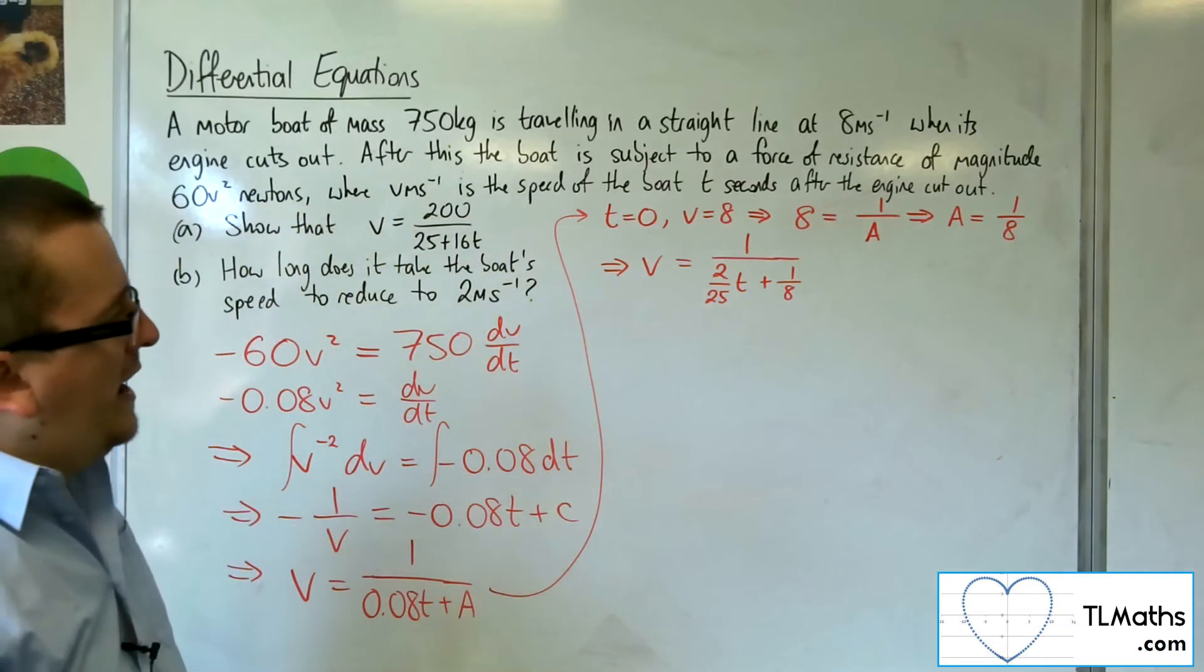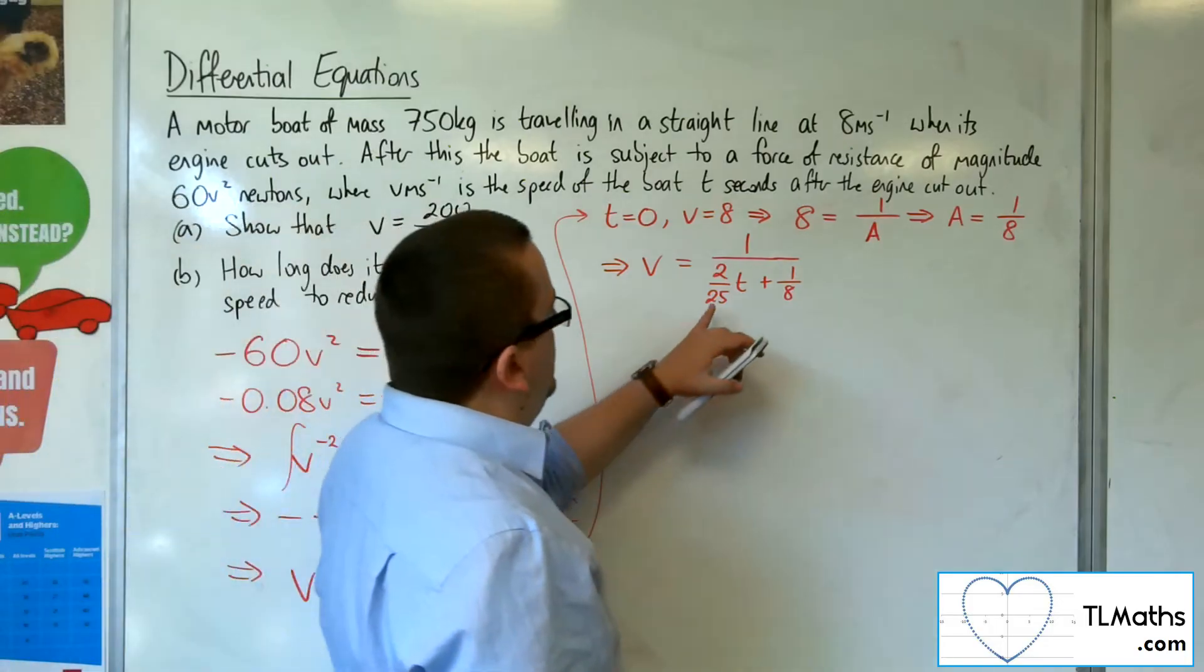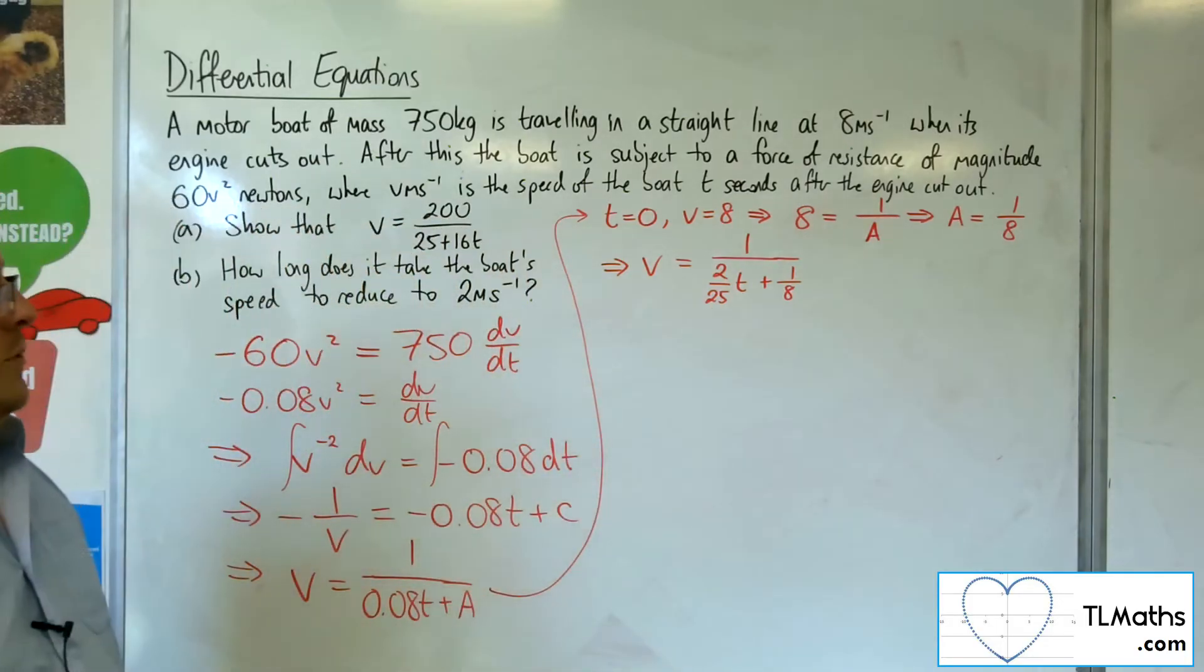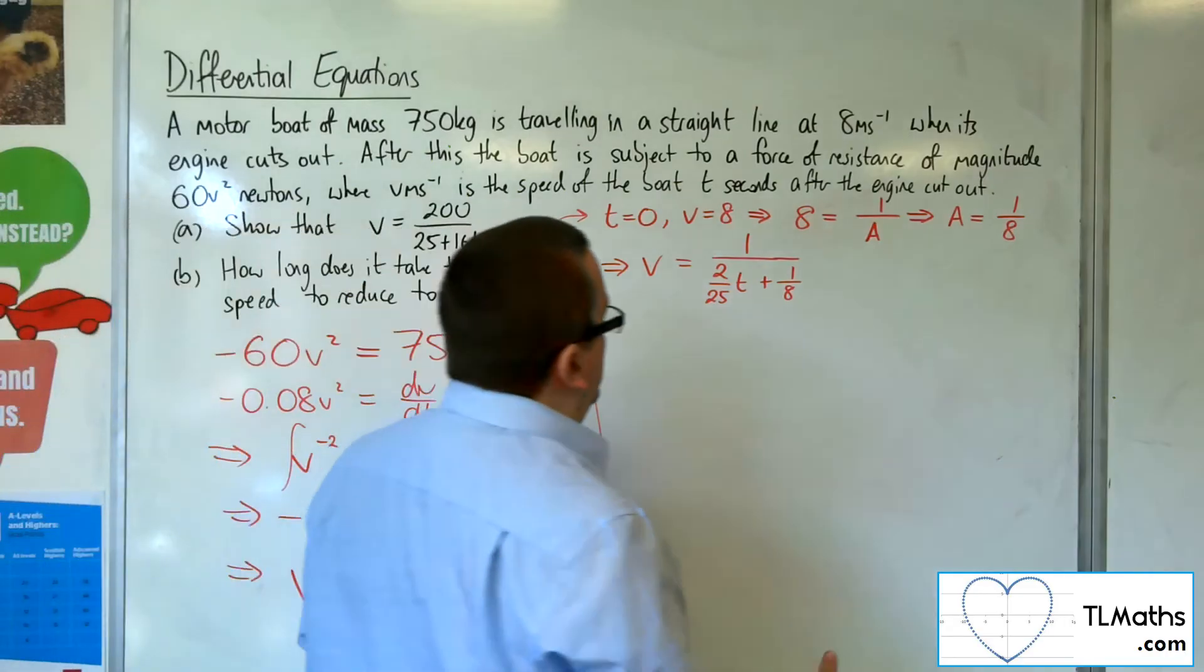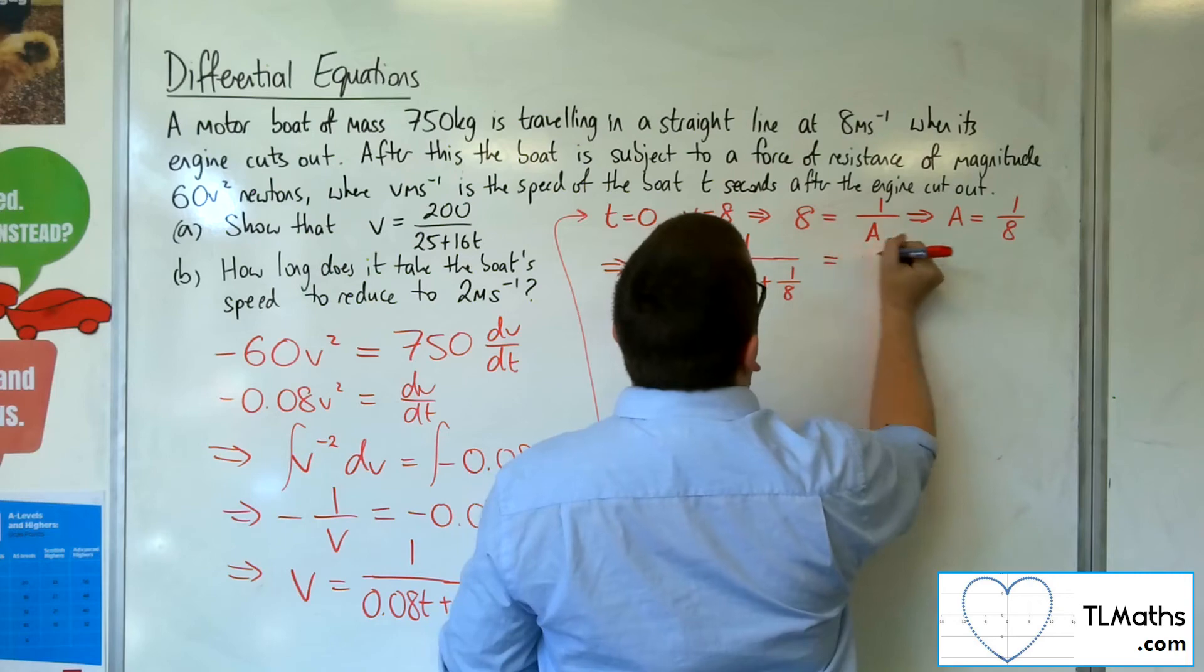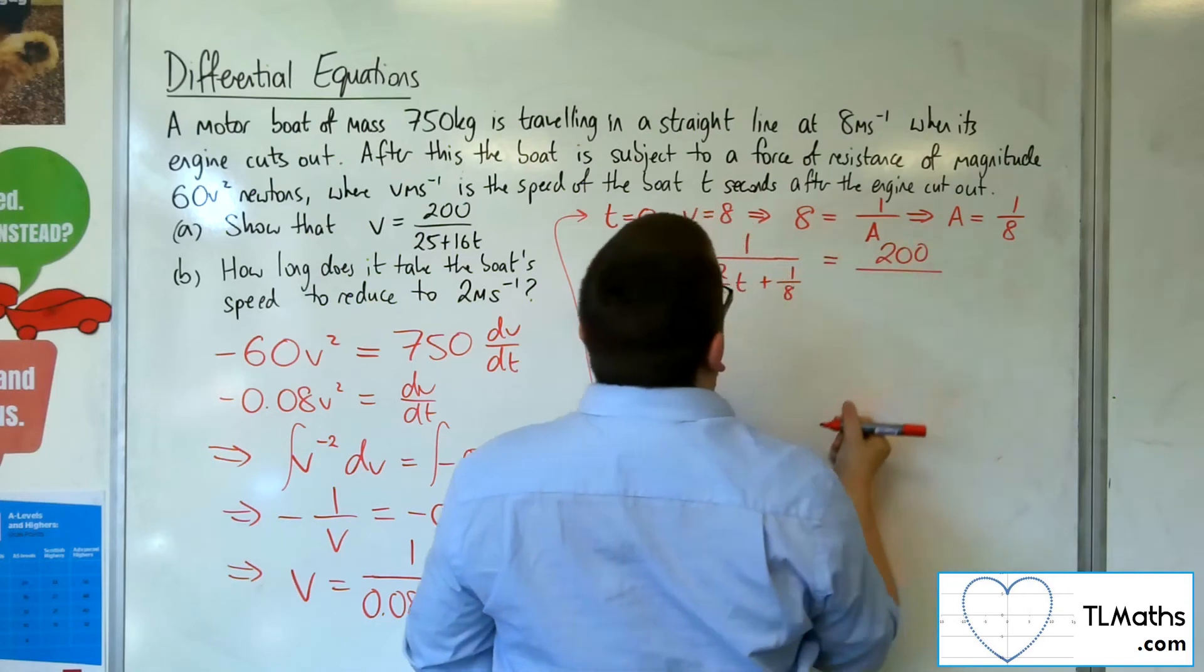So in order to get rid of the fractions here, I'm going to have to multiply top and bottom by 25 and top and bottom by 8. So 25 lots of 8 is 200. So multiplying top and bottom by 200, I'm going to get 200 over...